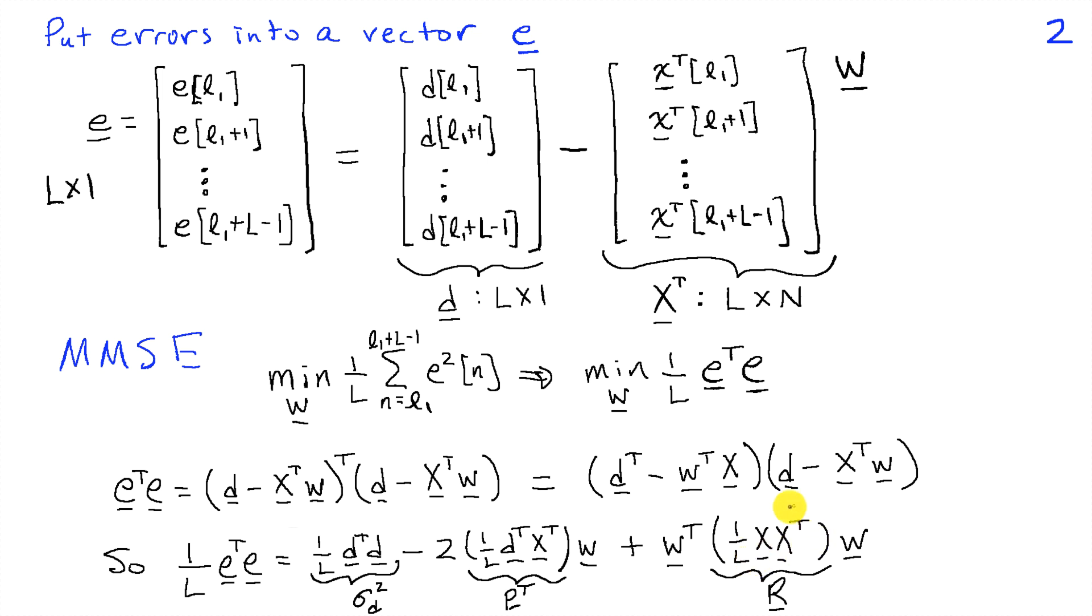Putting the one over L inside, we'll write it in this form. And that allows me to define new terms, sigma D squared, which is the average squared value in D. And then I'm going to define P based on the inner product between D transpose and the columns of X transpose. And then we'll have R to be this product, one over L, X, X transpose. So now we've simplified the notations.